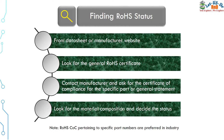Now, how can we find the RoHS status for a part? The first step is to check the datasheet or the manufacturer's website. If that is not available, we look for a general RoHS certificate. The third step is to contact the manufacturer and ask for a certificate of compliance for the specific part, or a general statement. If all three options are not feasible, we can ask for the material composition and decide based on that — if those 10 materials are present below the permissible value, we can mark the component as RoHS compliant.